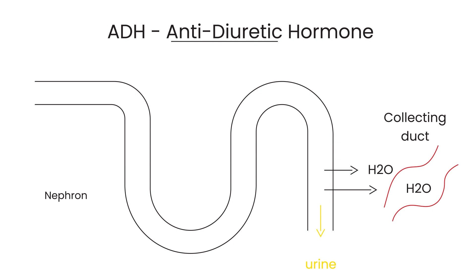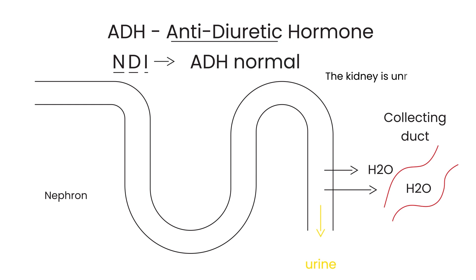In nephrogenic diabetes insipidus (NDI), the pituitary does release normal amounts of ADH, but the kidney is unresponsive — and that's the key. This distinguishes it from central diabetes insipidus, where the pituitary doesn't release adequate amounts of ADH. In nephrogenic, a normal amount of ADH is released from the pituitary, but the kidney is insensitive to it.